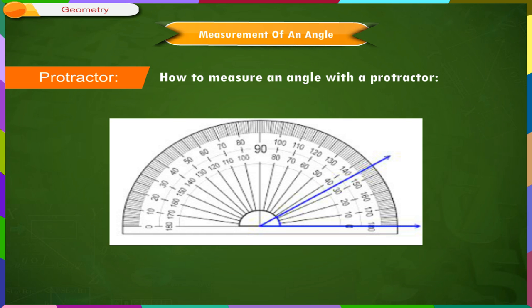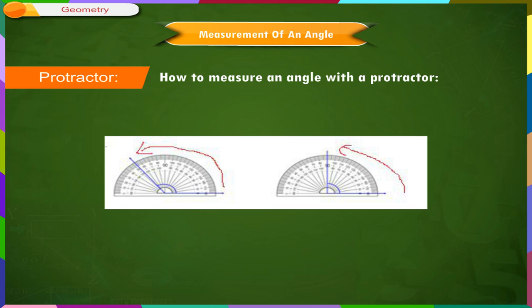Which set you read depends on how you place the protractor. Place it so that one side of the angle lines up with one of the zeros and read that set of numbers. In the examples shown, we lined up one side of the angle with the 0 of the inner set of numbers. So, to measure the angle, we need to read the inner scale.